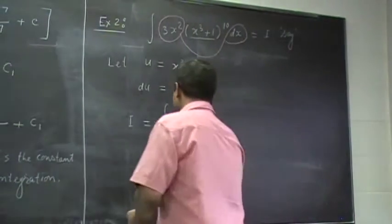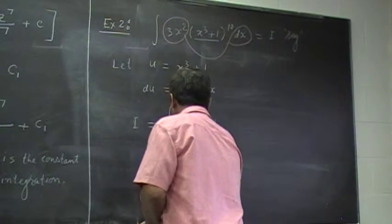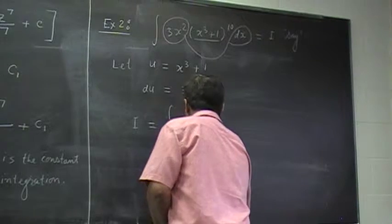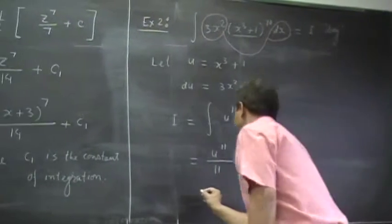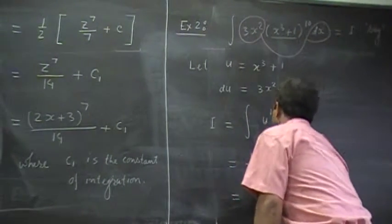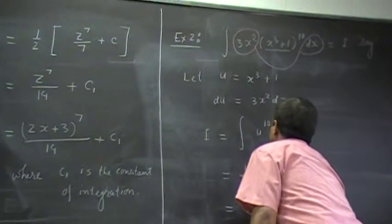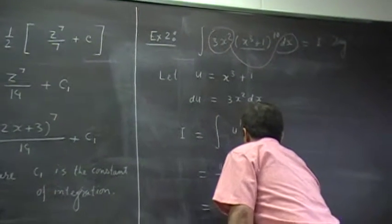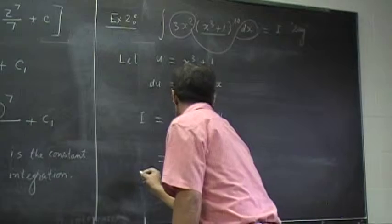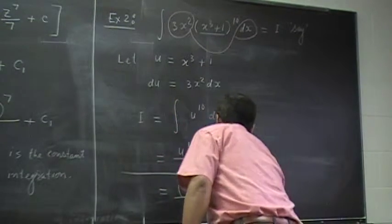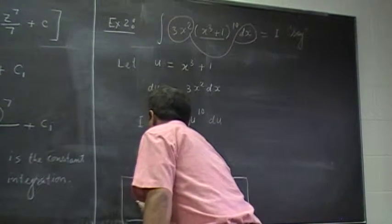What is integral of u to the 10? u to the 11 over 11 plus constant of integration. Okay. Let's put back the value of u. The value of u is (x cubed plus 1) to the 11 over 11 plus constant of integration. This is the integral we are looking for.